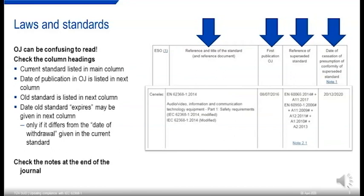The official journal can be confusing to read — you need to look at the column headings. The current standard is listed in the main column. The date of publication in the official journal is in the next column. The old superseded standard is listed in the reference of superseded standard column, and the last column is the date of cessation of the superseded standard. For 62368-1, there is a specific date published in the official journal that differs from the withdrawal date given in the standard itself.